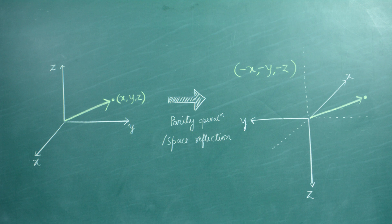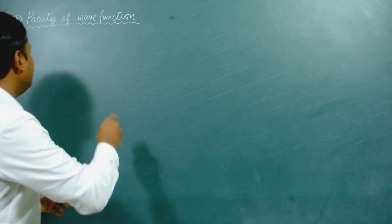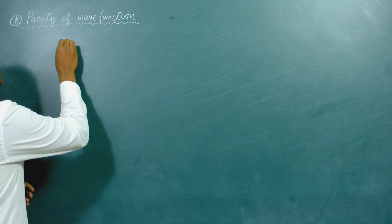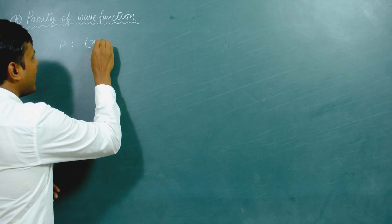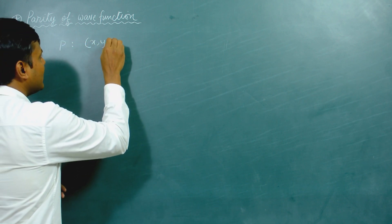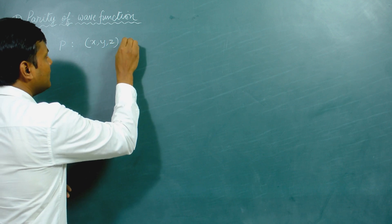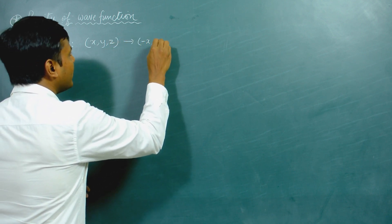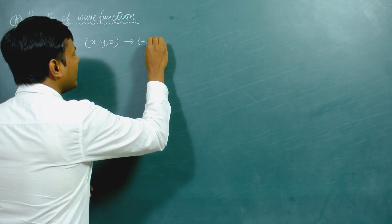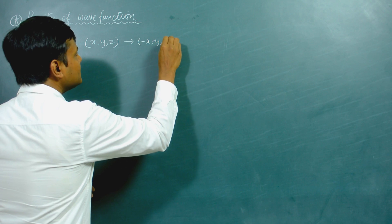So the new physical quantity will be dependent upon minus x, minus y, and minus z. Quite simply put, the parity operation involves a substitution of x, y, and z in that particular function with minus x, minus y, and minus z.